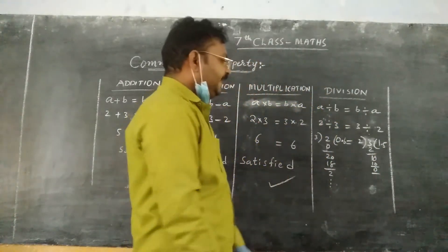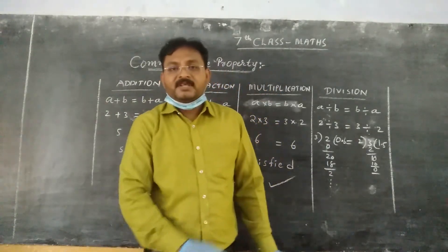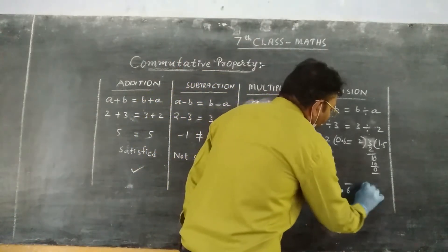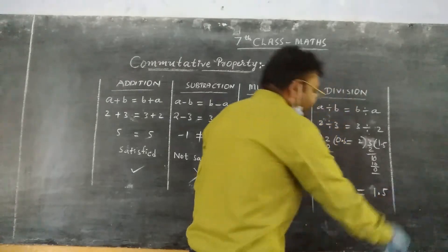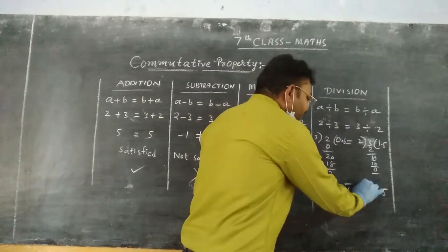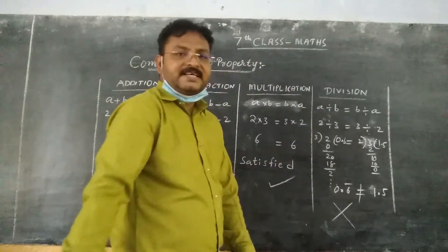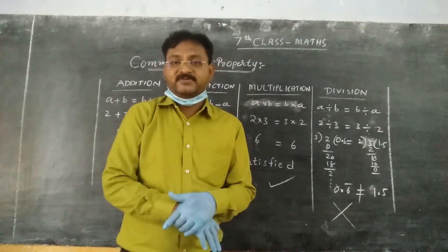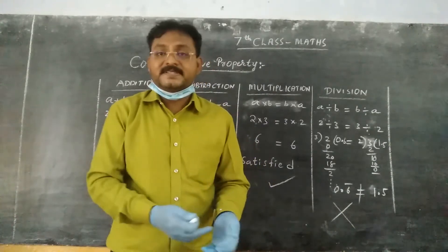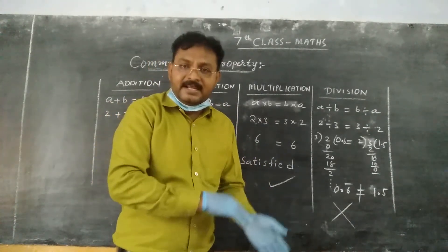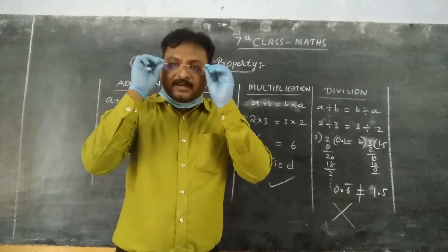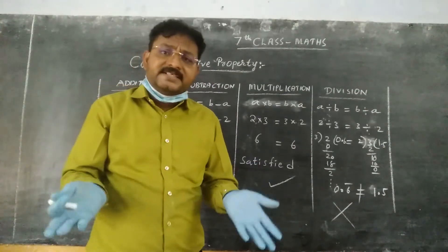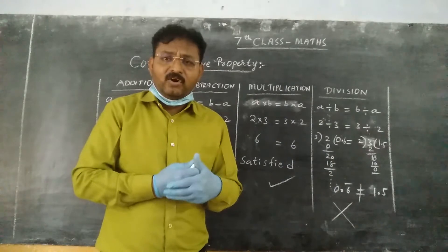So here in division, we are getting decimal numbers. We get 0.6 recurring for 2 divided by 3, and 1.5 for 3 divided by 2. They are not equal. When we do division and get decimal numbers on both LHS and RHS, those decimal numbers are not integers actually.